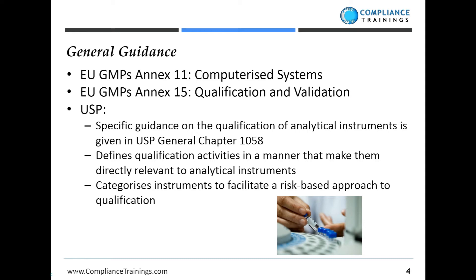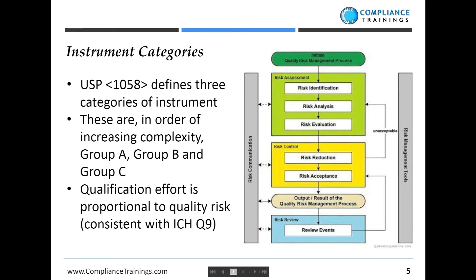For that specific guidance we turn to the United States Pharmacopeia, which has a really useful general chapter — General Chapter 1058. That gives us a really nice framework on which to plan qualification activities based on a categorization of instruments in terms of their quality risk. This USP general chapter defines three categories: instrument group A, group B, and group C, and the qualification effort in each group is related to quality risk.